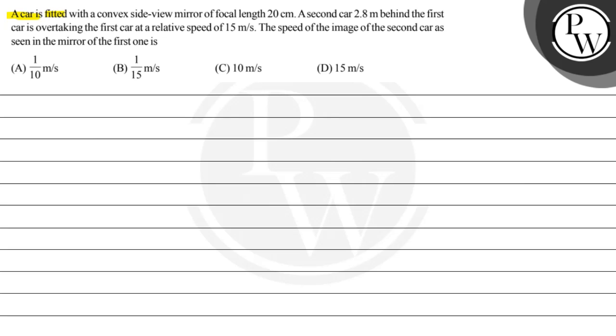A car is fitted with a convex side view mirror of focal length 20 cm. A second car 2.8 meter behind the first car is overtaking the first car at a relative speed of 15 meter per second. The speed of image of the second car as seen in the mirror of the first one is: